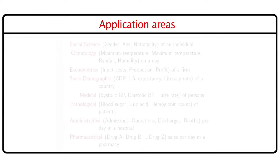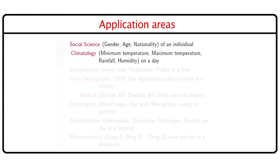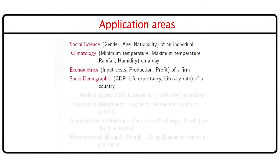There are various application areas of multivariate analysis. These include social science, where we can look at the gender, age, and nationality of an individual. It can include climatology, where we look at minimum temperature, maximum temperature, rainfall, humidity, and precipitation on a particular day. It can be applied to econometrics, where we look at input cost, productions, profits, etc. for a firm. In socio-demographic studies, we look at the gross domestic product, life expectancy, and literacy rate — all of which lead to the human development index.